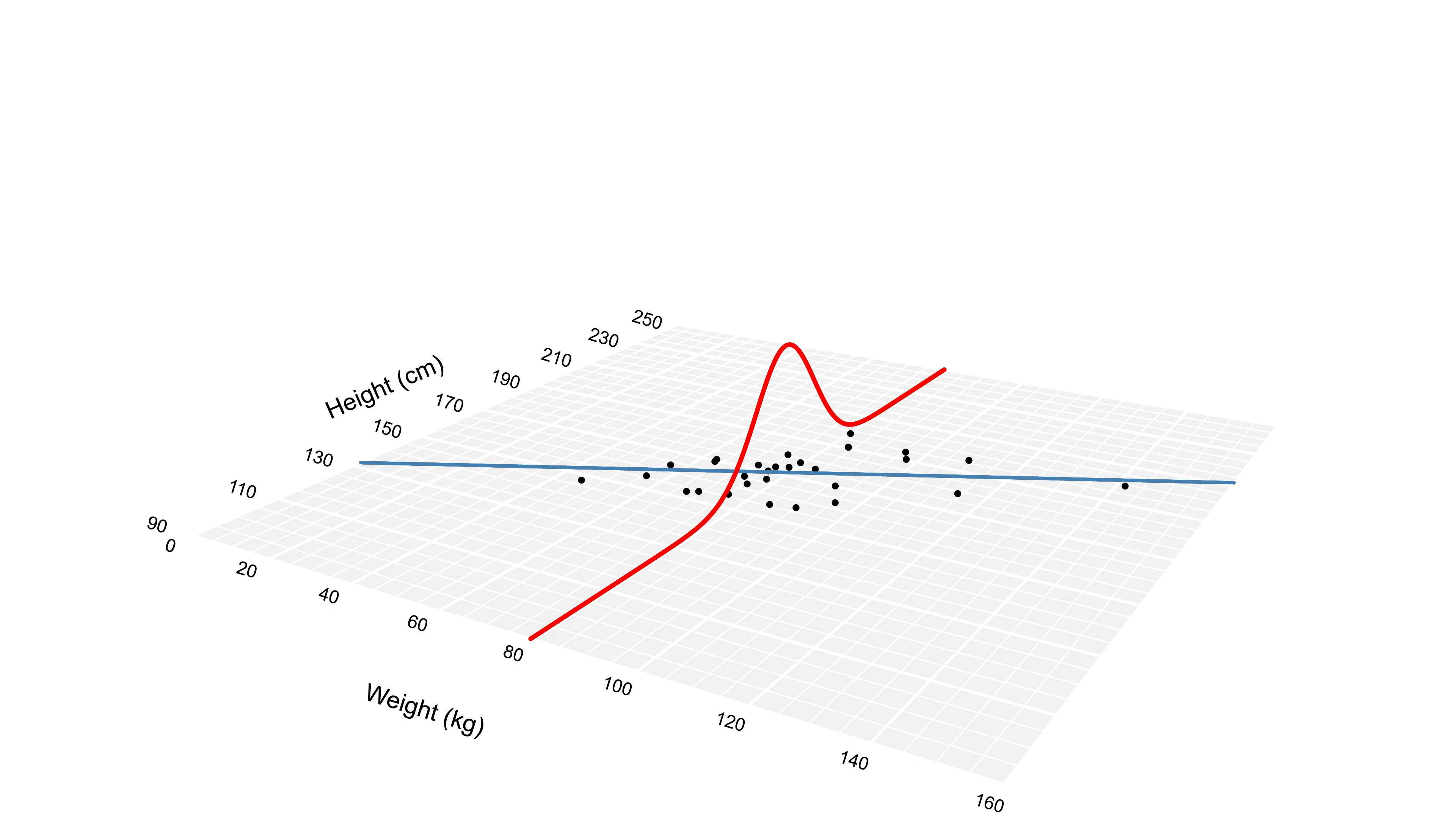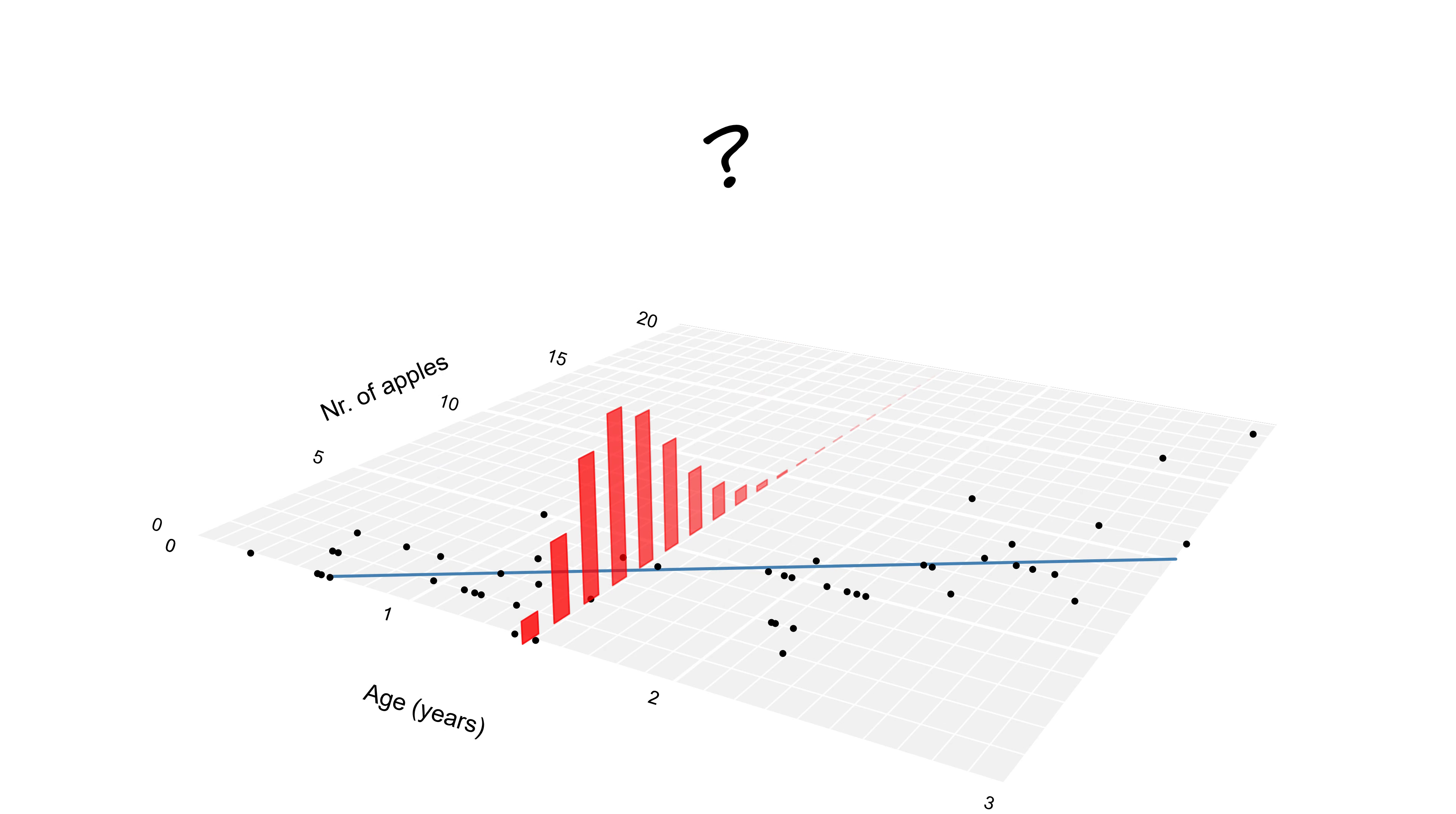So a GLM is just a linear model with a different probability distribution around it? Almost. I just didn't tell you yet about the last crucial component to make our GLM complete.